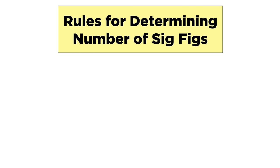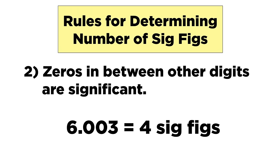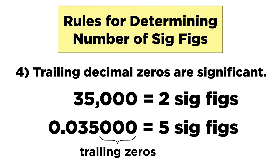Here are the rules for determining how many sig figs are in a value. One: any digit that's not zero is significant. Two: zeros in between other nonzero digits are significant. Three: leading zeros, ones that come before the first nonzero digit, are not significant. And four: trailing zeros, the ones that come after the last nonzero digit, are only significant if they are decimal zeros.